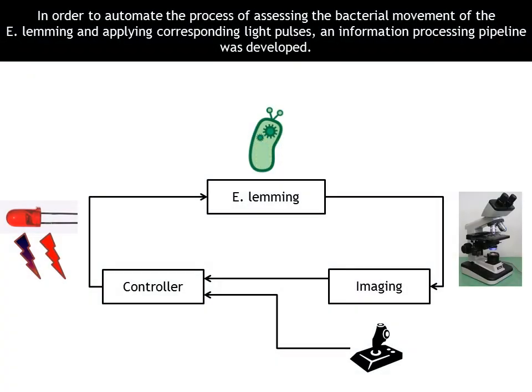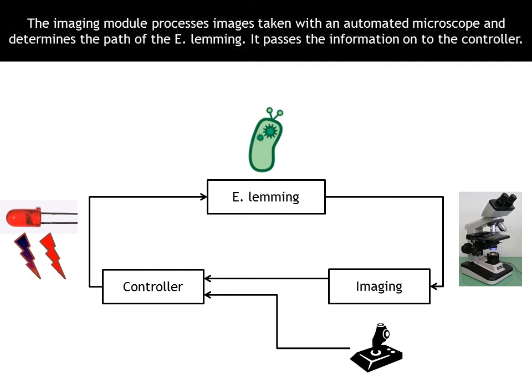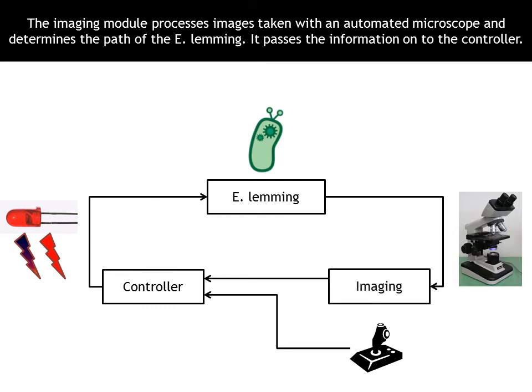In order to automate the process of assessing the bacterial movement of the e-lemming and applying corresponding light pulses, an information processing pipeline was developed. The imaging module processes images taken with an automated microscope and determines the path of the e-lemming, then passes the information on to the controller.